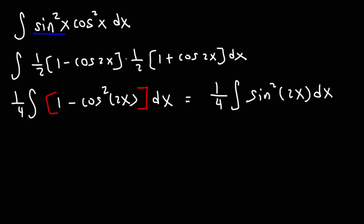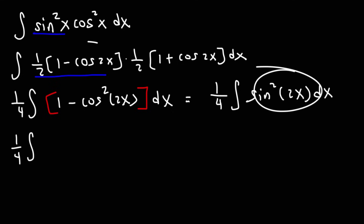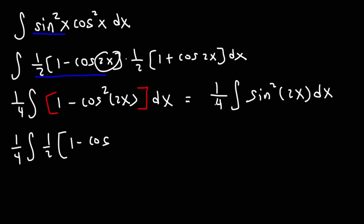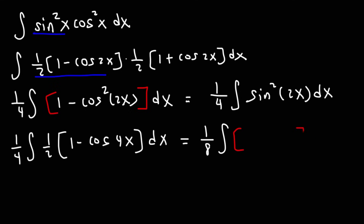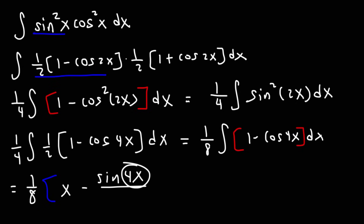So we now have 1/4 integral of (1 minus cosine squared 2x) dx. Using the identity 1 minus cosine squared equals sine squared, this is 1/4 integral of sine squared 2x dx. Applying the power reducing formula with the angle doubling: sine squared 2x equals 1/2 times (1 minus cosine 4x). Combining 1/4 and 1/2 gives 1/8 integral of (1 minus cosine 4x) dx. The antiderivative of 1 is x, and the antiderivative of cosine 4x is sine 4x divided by 4. The final answer is 1/8 times (x minus sine 4x over 4) plus c.